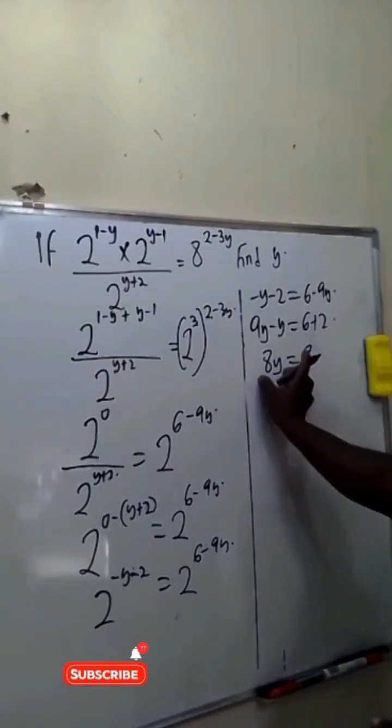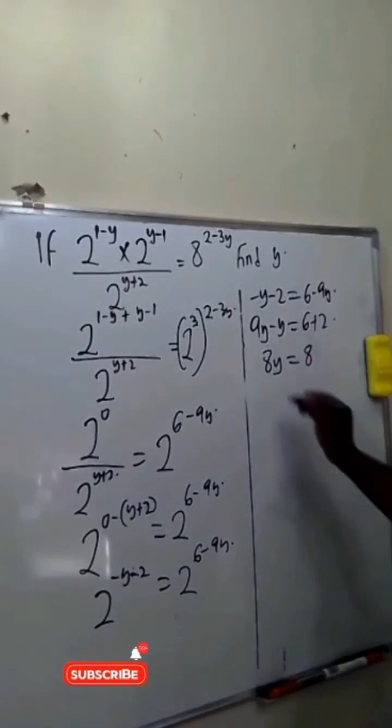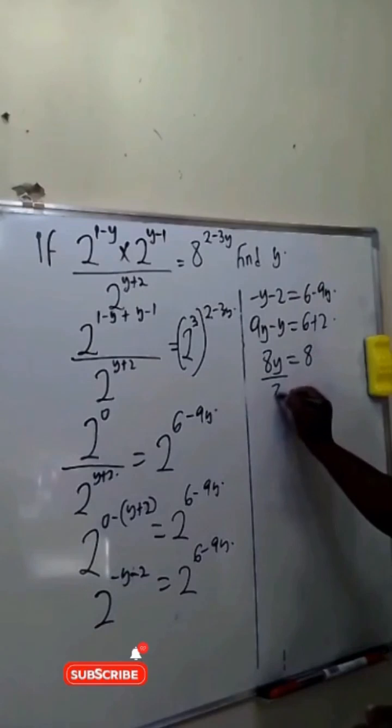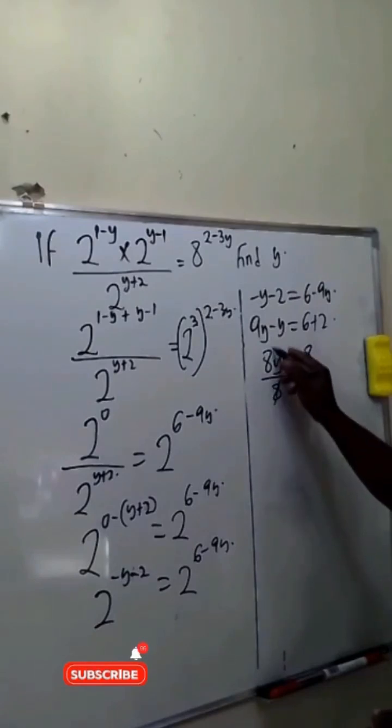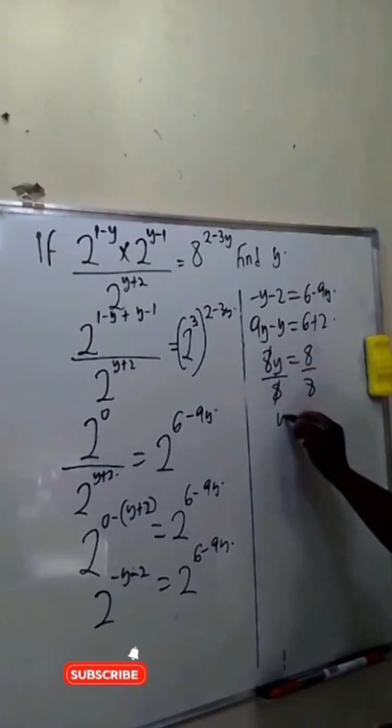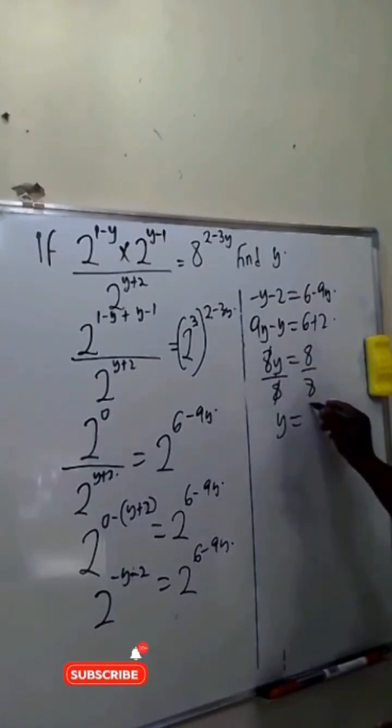The next step is to divide both sides by 8. Dividing both sides by 8, the 8s cancel and y equals 1.